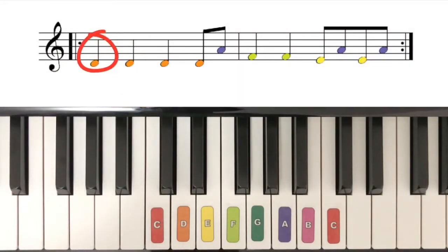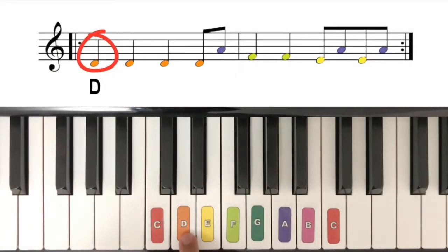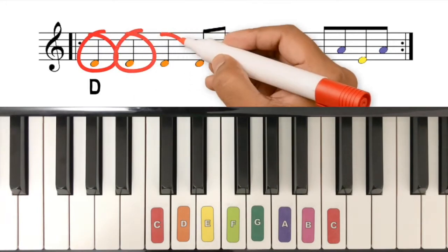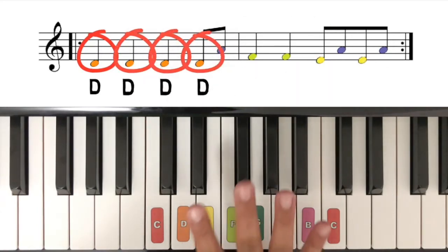Let's start by finding our first note, which is orange colored and called D. Once we find it, we're going to play it the number of times we see it, which is four.